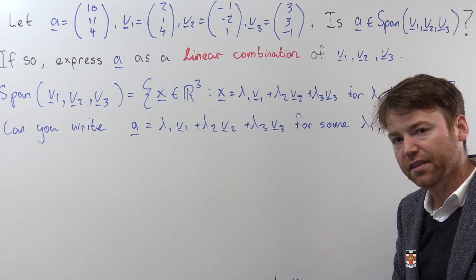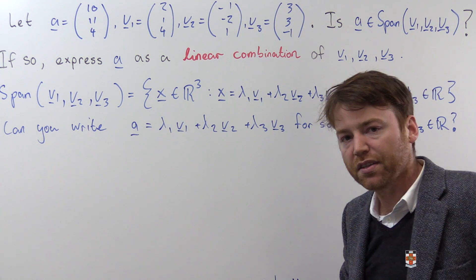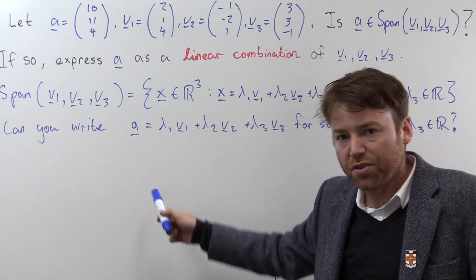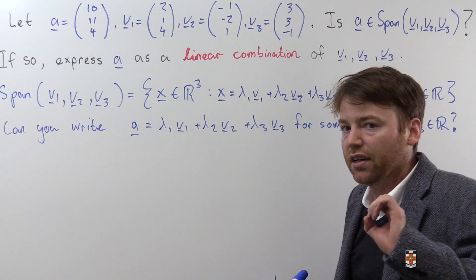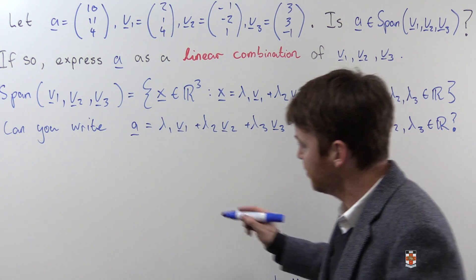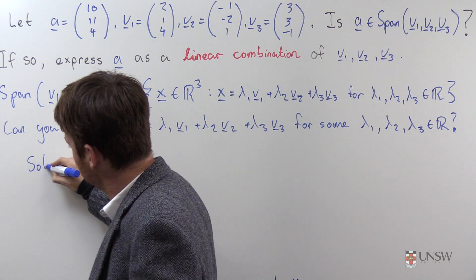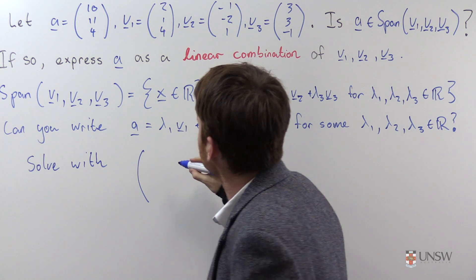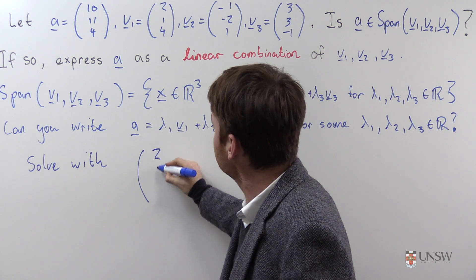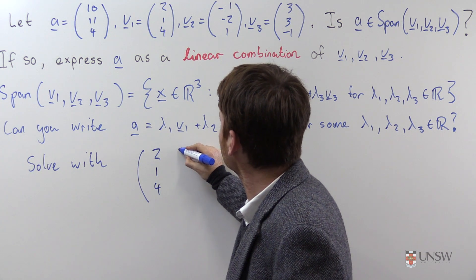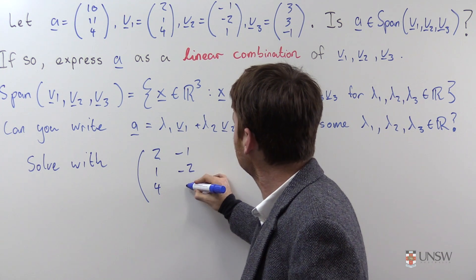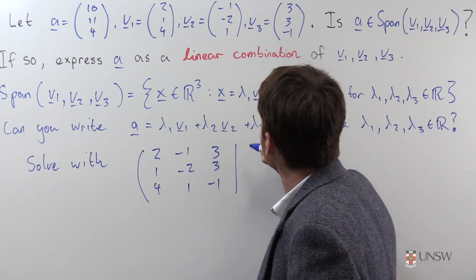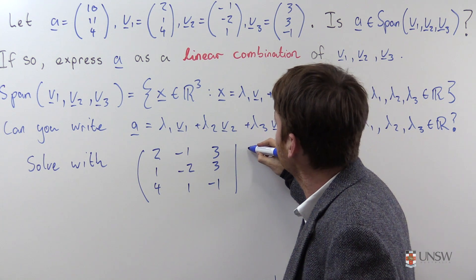Can you write a vector as a linear combination of the other vectors? Well this is the kind of thing that we've already done in Math 1a where we solve this system of linear equations using an augmented matrix. So we'll solve it with the augmented matrix whose first column is v1, second column is negative 1, negative 2, 1, v2, third column is 3, 3, negative 1 and in the augmented column we have the vector a.